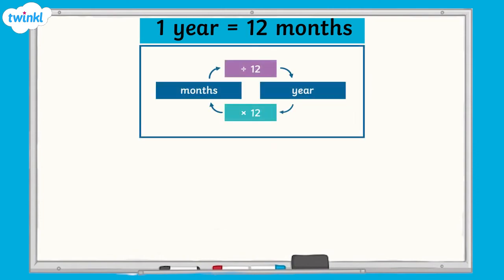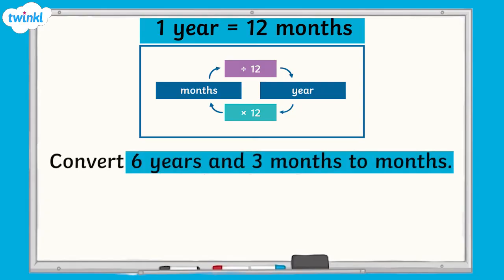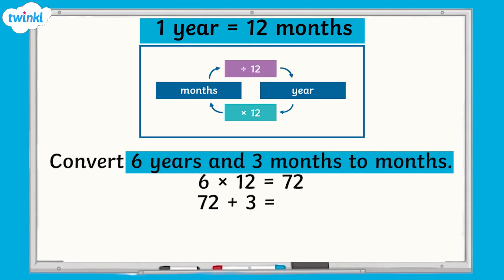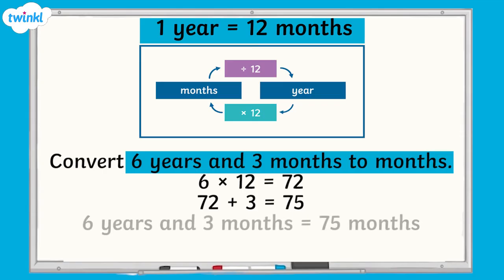Now let's take a look at how to convert between months and years. There are 12 months in a year. To convert years to months, we multiply the number of years by 12 and add on any remaining months, to give us the total number of months. For example, to convert 6 years and 3 months to months, we would multiply 6 by 12, which equals 72, and then add on the remaining 3 months. 72 add 3 equals 75, so 6 years and 3 months equals 75 months.